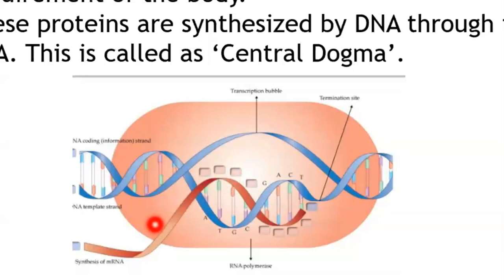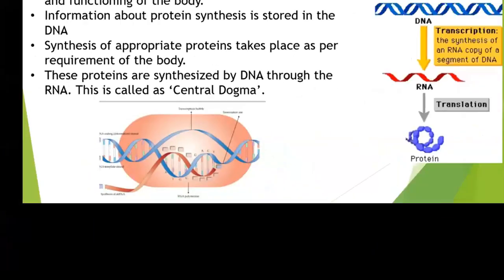Ultimately there is a stop transcription sequence where RNA polymerase stops, and the final mRNA is complete. This happens in the nucleus. The production of messenger RNA happens in the nucleus, but protein synthesis occurs in the cytoplasm. So the mRNA has to travel from the nucleus to the cytoplasm.